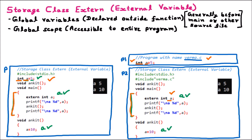There is one more point to note. For the external variable, the extern keyword is used. In the first program, on the top we have declared a variable int a and initialized its value to 5. Now, afterward, inside the main, to access the same variable, we use the keyword extern. That means extern int a — this is not another declaration, this is the same variable we are accessing. We are saying extern int a, meaning a variable which is already declared, and that variable we are using.